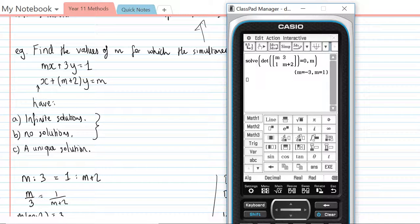So if we just go okay, we can see immediately that m is equal to negative 3 and m is equal to 1.